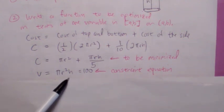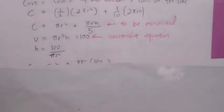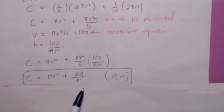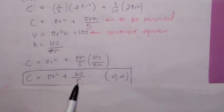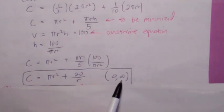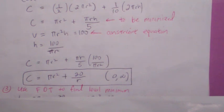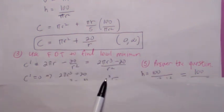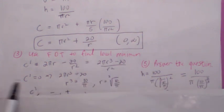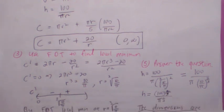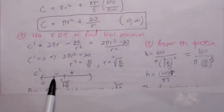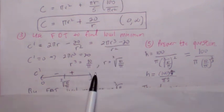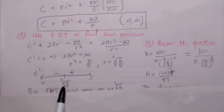The constraint equation is the volume, which is fixed. Solve for h and plug into the cost function. The reason we get the open interval zero to infinity is because r cannot be zero — it's undefined there — and there's no largest value of r either. So we use the first derivative test to find the local minimum. Taking the derivative of C and setting it equal to zero, the numerator gives r equals the cube root of 10 over pi. The sign chart for C prime shows it's negative before the critical point and positive after, confirming a local minimum at the cube root of 10 over pi.